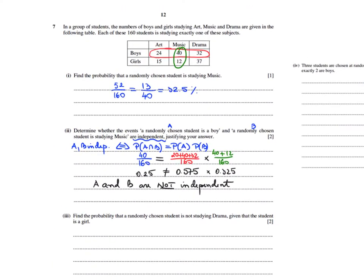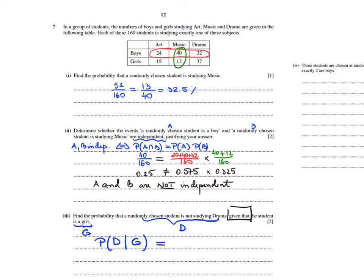Find the probability that a randomly chosen student is not studying drama, given that the student is a girl. This suggests conditional probability — 'given that' signals a condition. Let me use D for drama and G for girl. I need to find P(D | G), which equals P(drama and girl) over P(girl). Try to use meaningful notations.